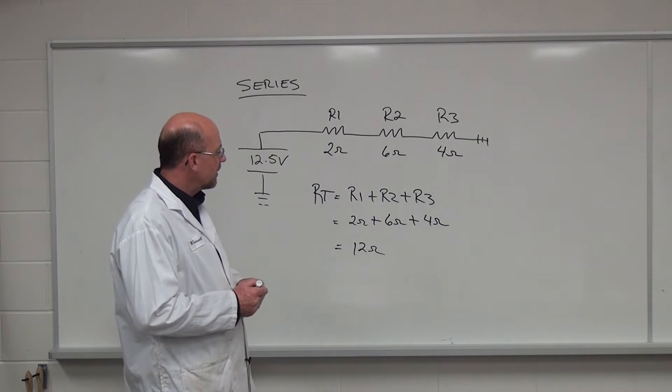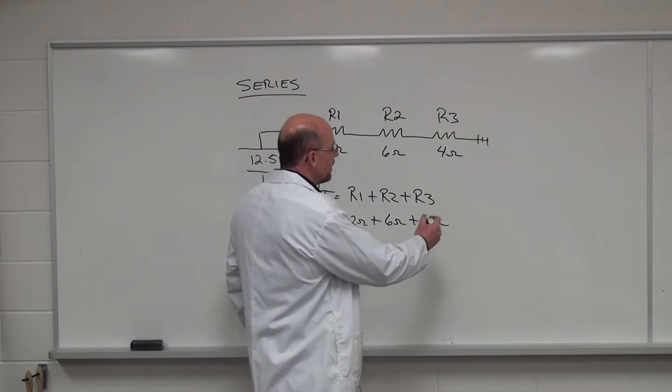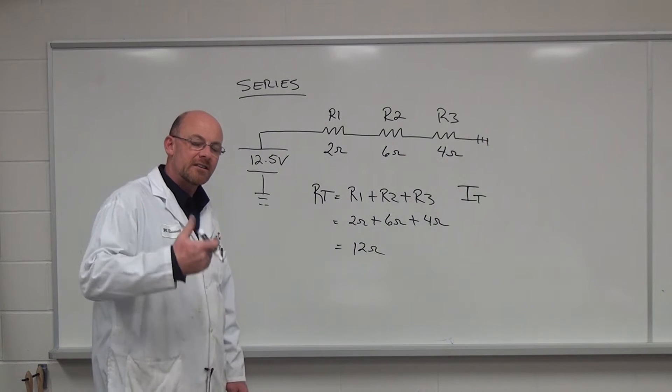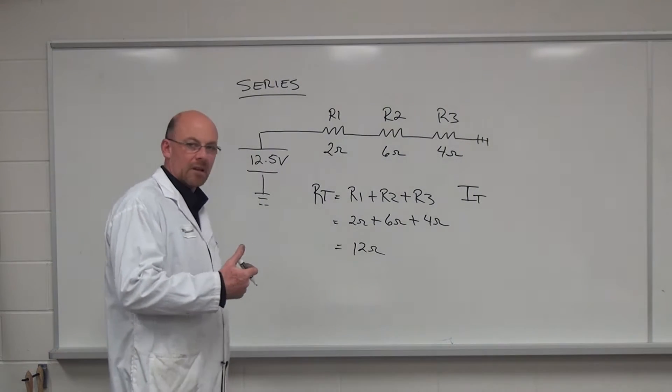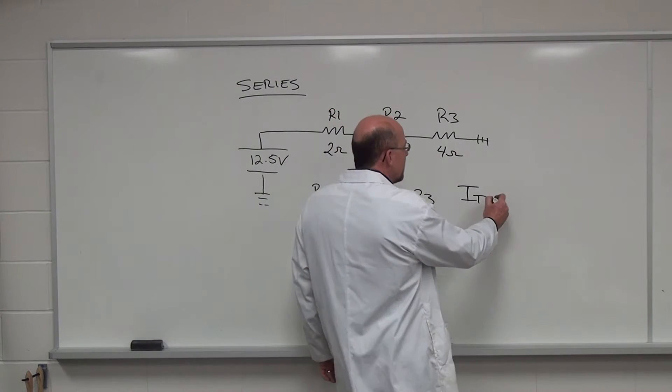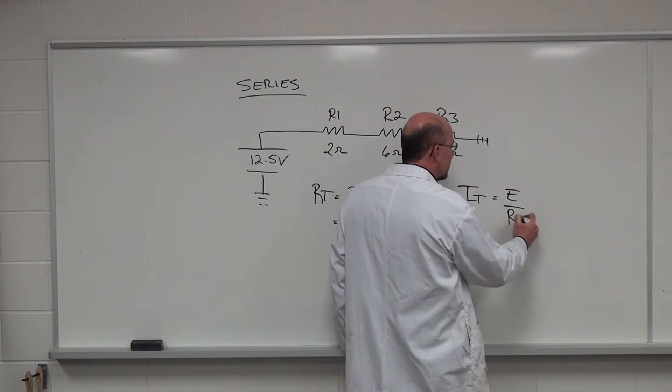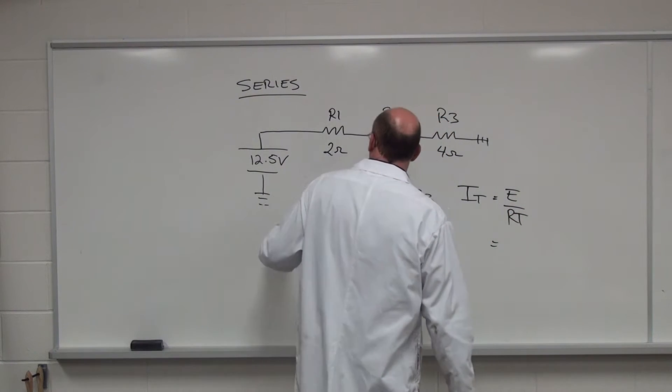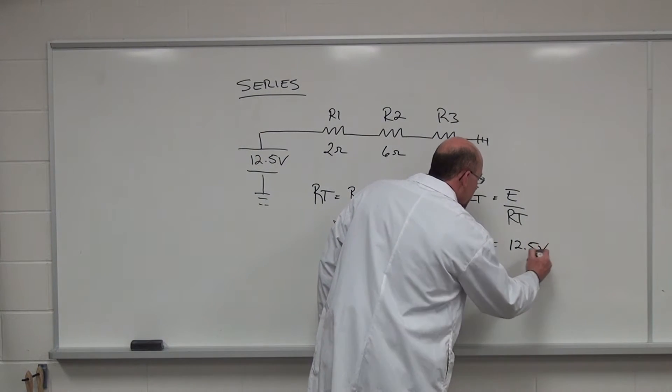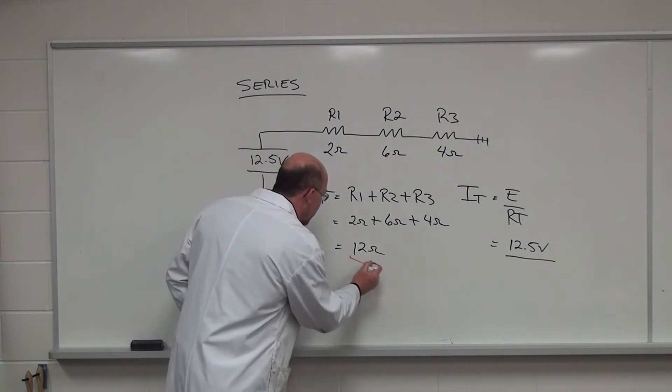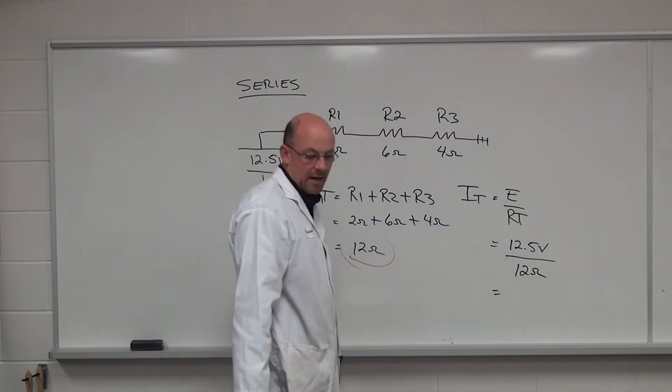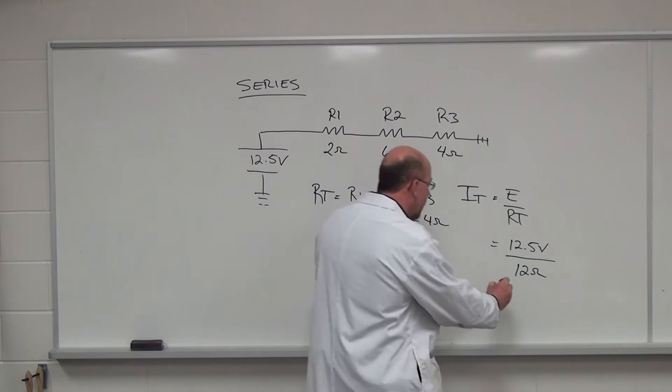So the next one that we have to take a look at is the amount of current flowing in the circuit. So now we're going to take a look at IT which is the intensity of current flow or the rate of electrons that flow through the circuit at that particular point. So IT equals E over RT. And we take the voltage in the circuit which is 12.5 volts divided by the resistance total which we've already established right here of twelve ohms. We end up with a value of 1.04 amps.